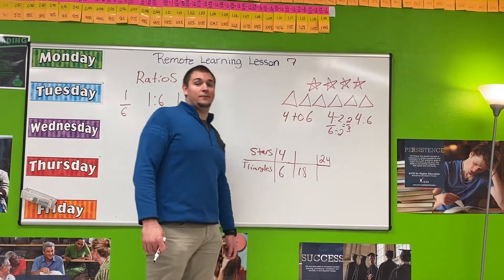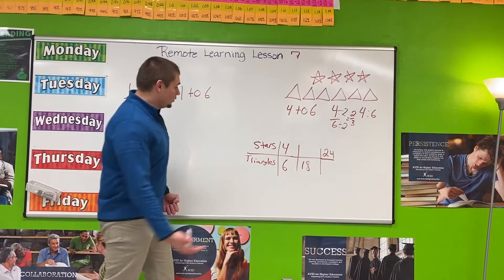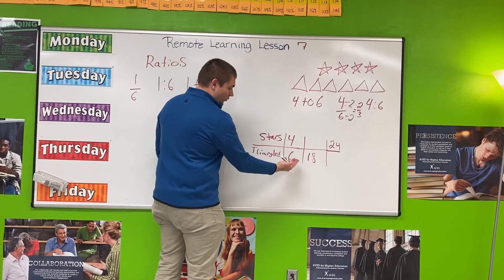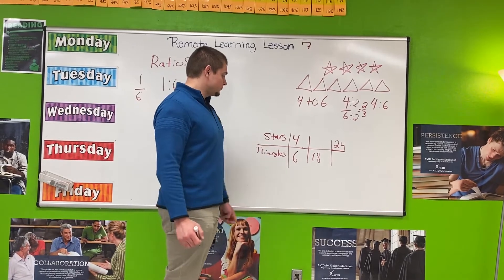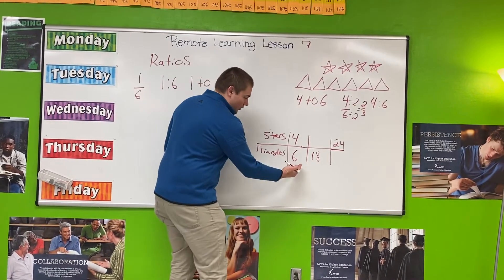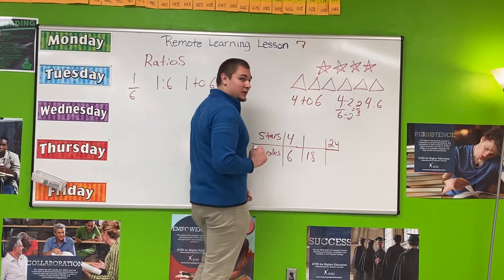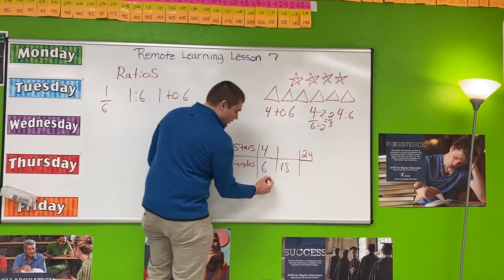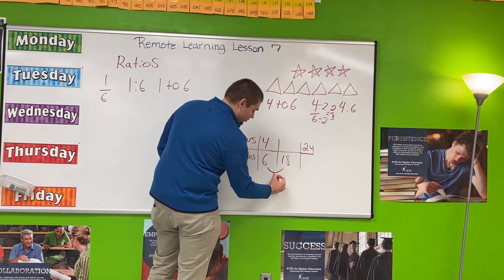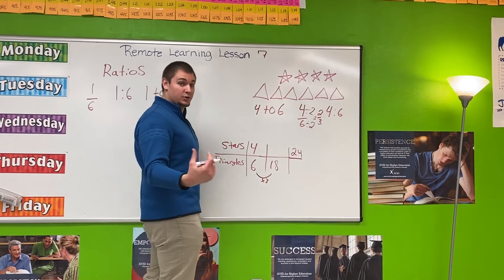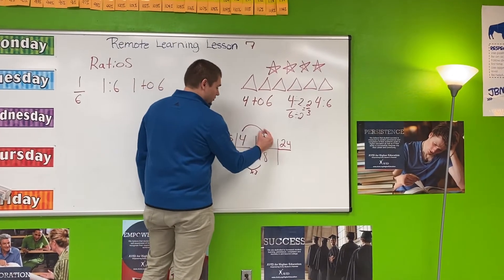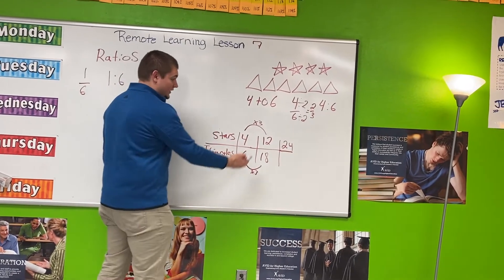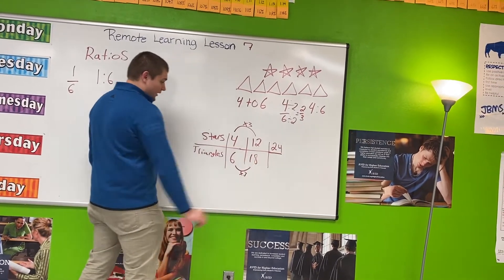On your worksheet, you will see that you're going to have to fill out a ratio table. I'm going to use the exact same example: stars to triangles, four over six — four stars for every six triangles. I see six on the bottom; how many times can six go into 18? I can do 18 divided by six, which is three, so six times three is 18. Whatever I do to the bottom, I must do to the top. Four times three is 12. So an equivalent ratio to four stars to six triangles is 12 stars for every 18 triangles.